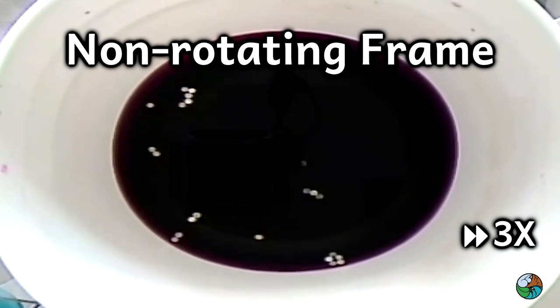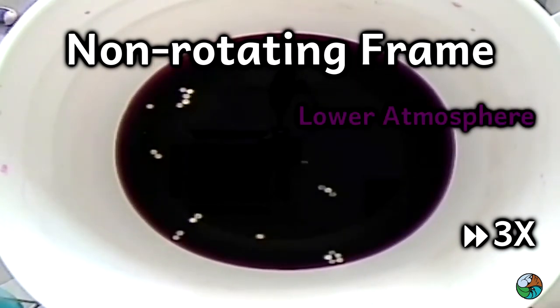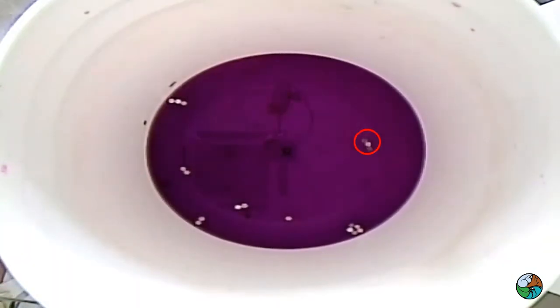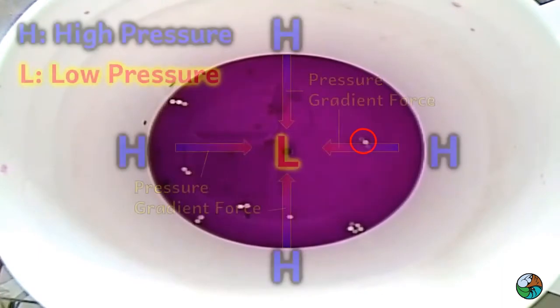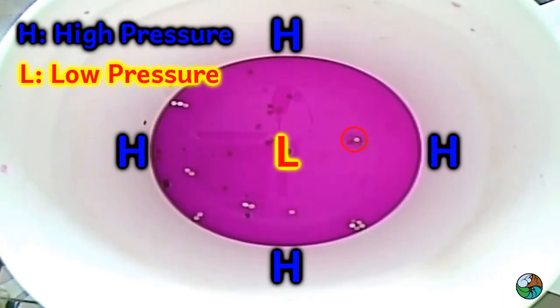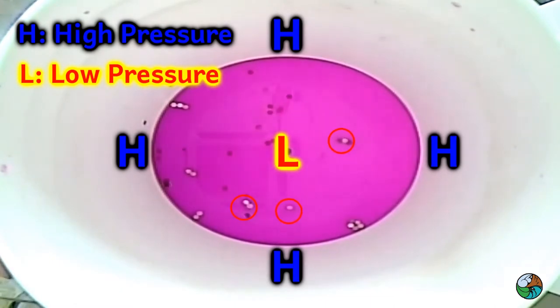Let's consider the bucket as the lower atmosphere and the paper dots as air parcels. When there is no rotation, pressure gradient force causes the air parcels to move towards the center in a radial direction.